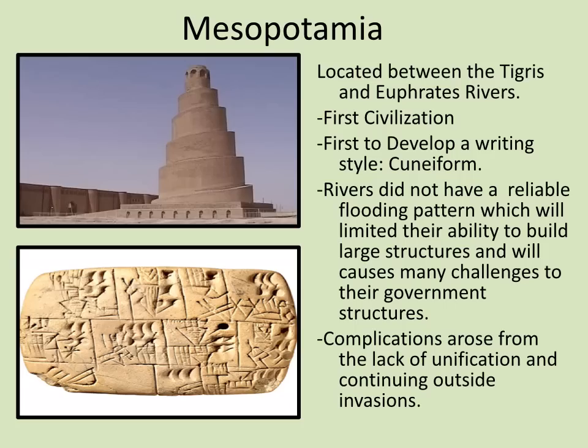Mesopotamia is going to be the first civilization, located between the Tigris and the Euphrates River. It is the first to develop a style of writing called cuneiform — written into a wet clay palette with a reed. Keep in mind there are major pictures of the civilization and its writing style, so please make sure you are taking a look at it. One of the interesting things about Mesopotamia is that there are not many buildings that really survive. Yes, we have a ziggurat — it's a very massive structure — but we're not going to see it built up as, say, the Egyptians.